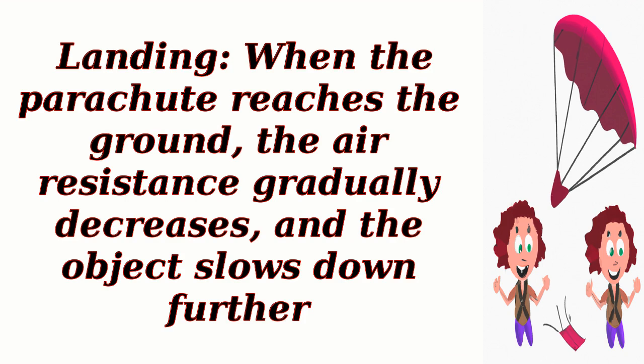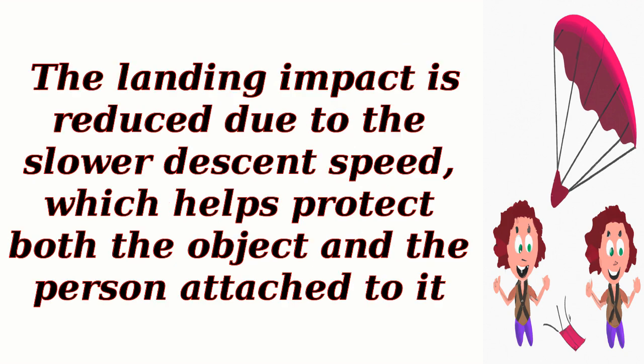Landing: When the parachute reaches the ground, the air resistance gradually decreases and the object slows down further. The landing impact is reduced due to the slower descent speed, which helps protect both the object and the person attached to it.